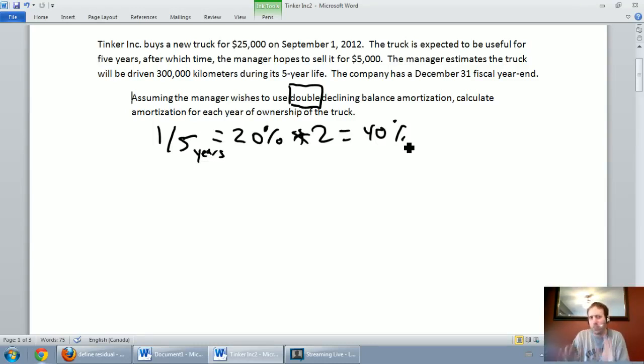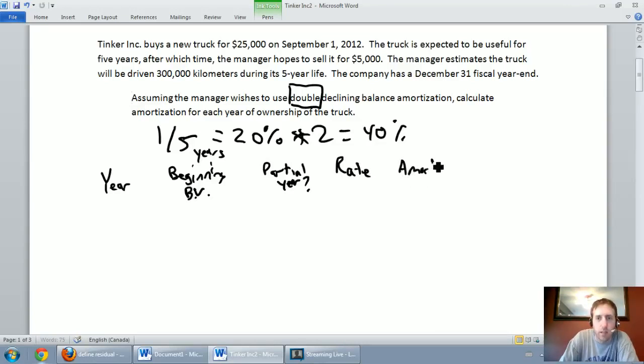It's a declining balance method, and so the math is a little bit different. I find you have to make a table to figure out how to do this. So let's make our table. We'll put year on the left. Then I'm going to put beginning BV, and what BV stands for is the book value of our assets, so our beginning book value. I'll put a column here for partial year, and it's just for the first year really. If I have a partial year, I want to put the number of months down. Then I'm going to put the rate, which we calculated as 40%, our amortization expense, and our ending BV, or our ending book value of our assets.